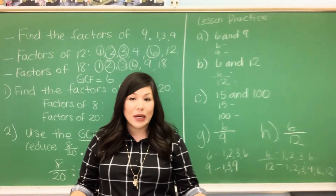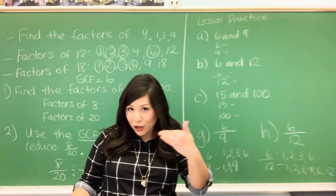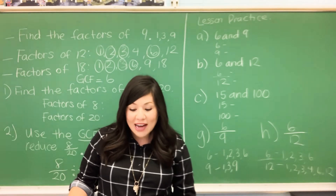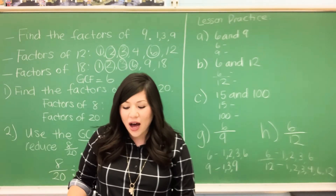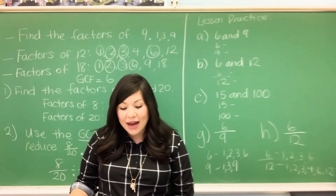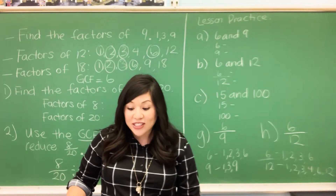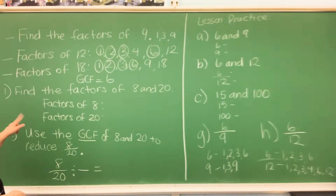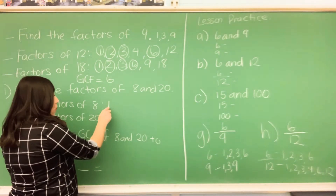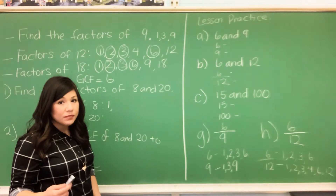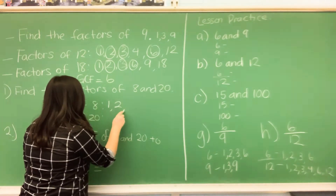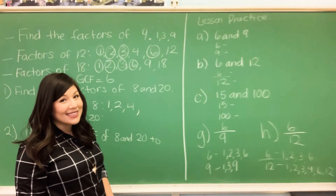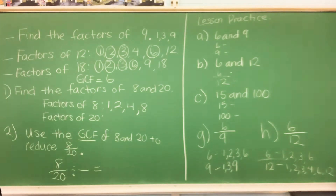Let's see if we can do example 1 together. If you understand this concept, go ahead and do this one with me. Example 1 reads: find the greatest common factor, GCF, of 8 and 20. I have to list the factors first, then identify and circle the common factors. So let's find the factors for 8. The factors of 8 are: 1, 2, 4, and 8. Now let's look at the factors of 20.